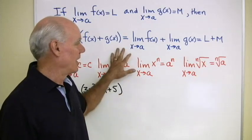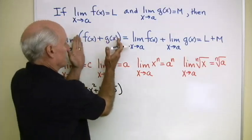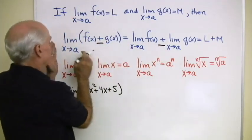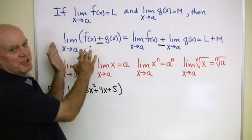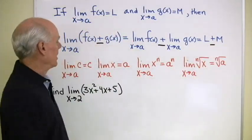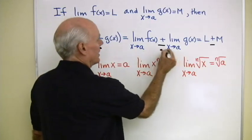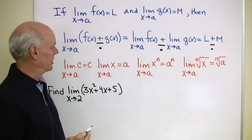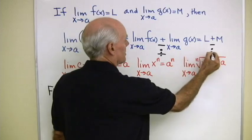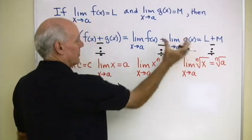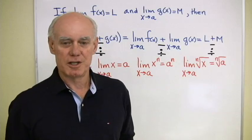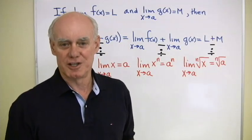The limit of a sum is the sum of the limits, and that's also true for the limit of a difference. The limit as x goes to a of f(x) minus g(x) is L minus M. The same thing happens for multiplication — the limit of a product is the product of the limits. And the same holds for division: the limit of a quotient is the quotient of the limits, as long as the denominator limit isn't zero.